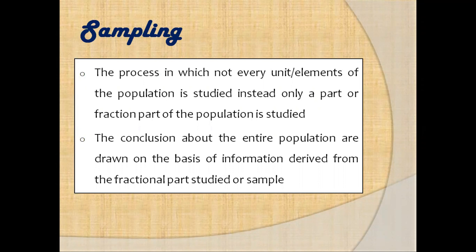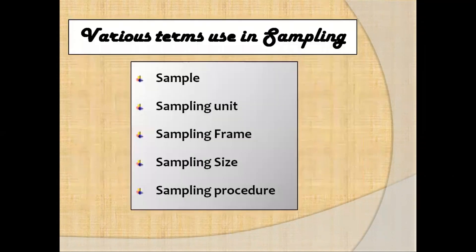Therefore sampling is a procedure of obtaining information about the given population by studying the fraction or part of the population. However, within the sampling there are different terminology often used in which students tend to be confused with from time to time, and these terms are sample, sampling unit, sampling frame, sampling size, and sampling procedures.